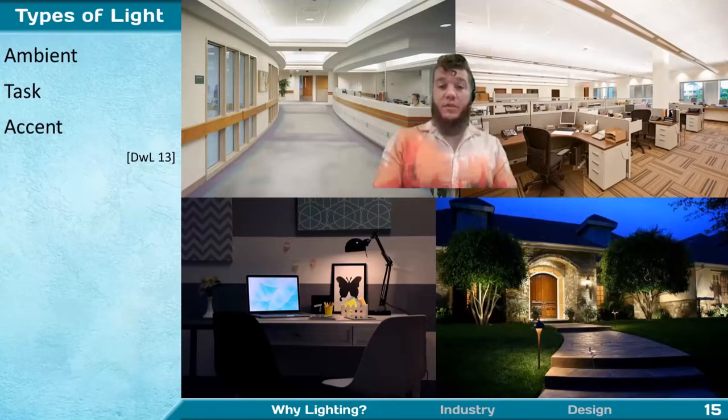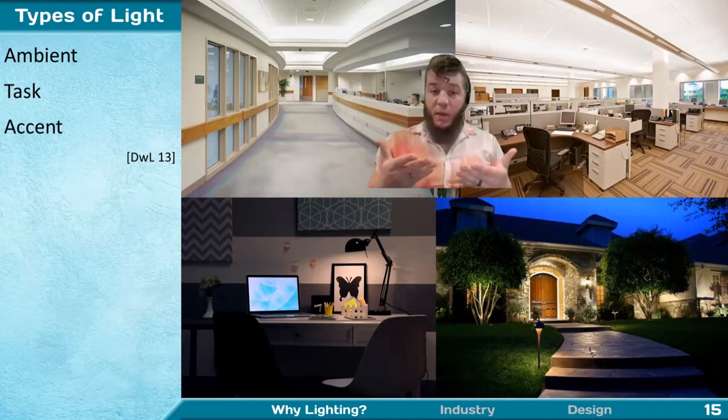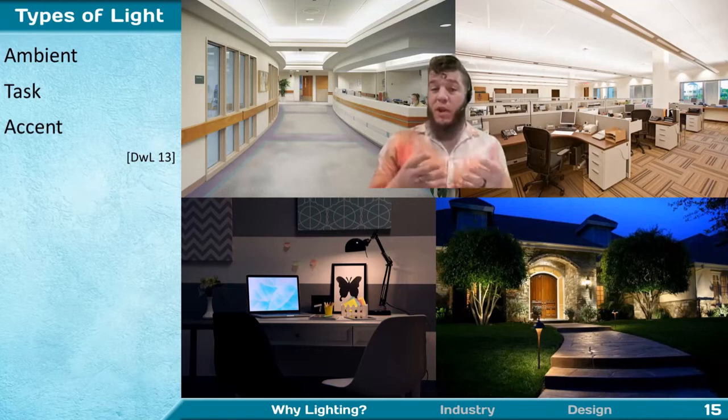Ambient lighting is that broad, diffuse light that provides the base illumination in any space you're designing. The placement, uniformity, and brightness of your ambient light sources are all central to the next topic we'll discuss: the Flynn modes.